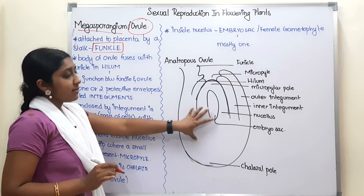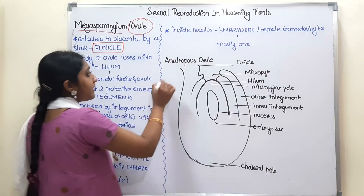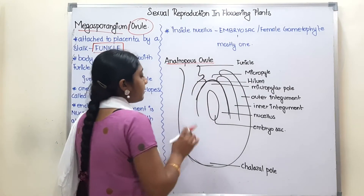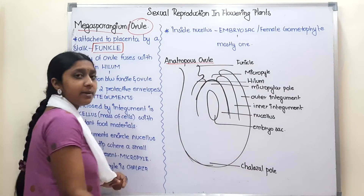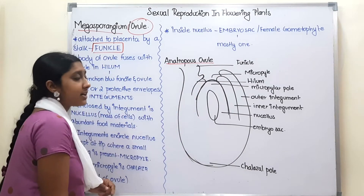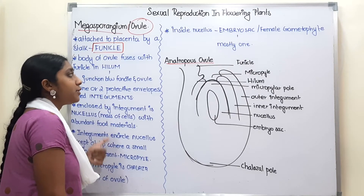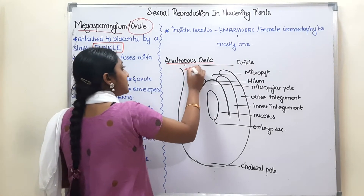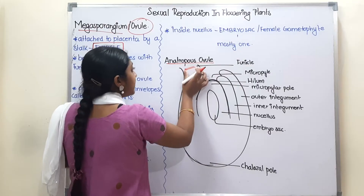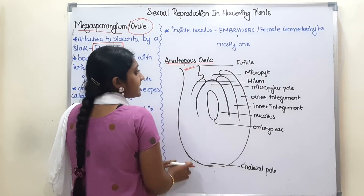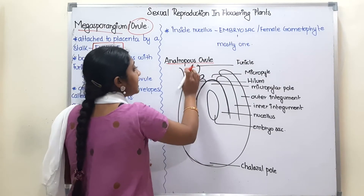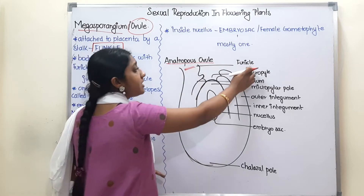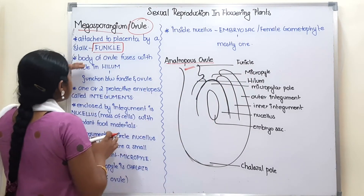Look at the diagram side by side. This is an anatropous ovule — we will take a diagram from the book. Looking at the first part of the ovule, we will attach to the placenta. That stalk-like attachment is the funicle.